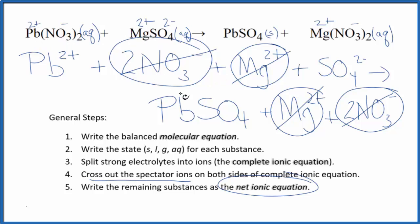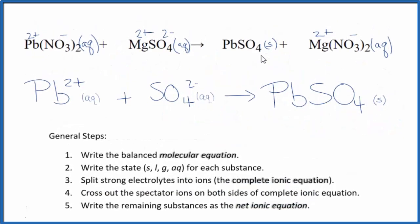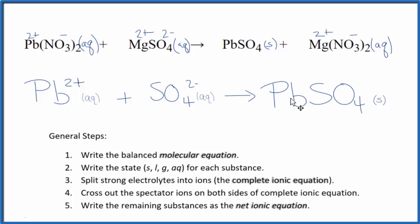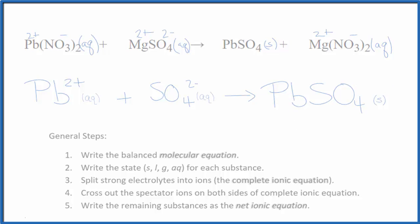Let me clean this up and add the states — we'll have our net ionic equation. This is the balanced net ionic equation for lead 2 nitrate plus magnesium sulfate. You'll notice that charge is conserved: we have a 2 plus and a 2 minus, giving a net charge of zero on the left, and the same net charge of zero on the right. And if you count the atoms up, they'll be balanced as well. This is Dr. B — thanks for watching, and we'll see you next time.